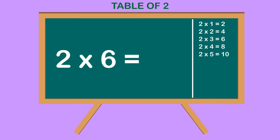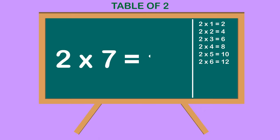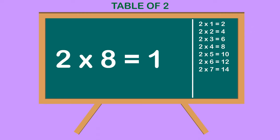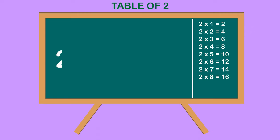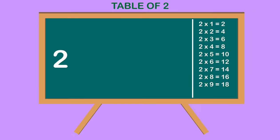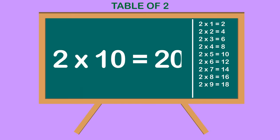2 6s are 12, 2 7s are 14, 2 8s are 16, 2 9s are 18, 2 10s are 20.